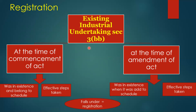An industrial undertaking means an undertaking pertaining to any industry specified in the first schedule as originally enacted, which was in existence on the commencement of the Industries Development Act 1951 — i.e., 8th May 1952 — or for the establishment of which effective steps had been taken before the commencement. So any industry which existed or had taken effective measures at the time of the act's creation, and which falls in the category of scheduled industries, is called an existing industrial undertaking.